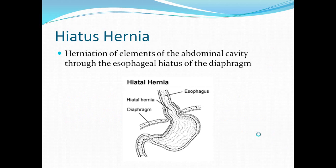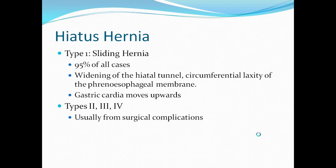Our first topic in esophageal conditions is hiatus hernia. This involves a herniation of elements of the abdominal cavity above the diaphragm into the esophageal hiatus, as illustrated in this diagram. Type 1 is the majority of cases, about 95%, in which a widening of the hiatal tunnel occurs with circumferential laxity of the phrenoesophageal membrane, resulting in the gastric cardia moving upwards.